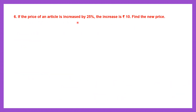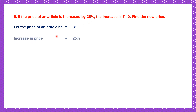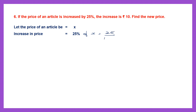Question 6. If the price of an article is increased by 25%, the increase is rupees 10. Find the new price. The price of the article is not given, so let's consider that price to be x. If it is increased by 25%, the increase in price is 25% of x, which is already given as 10 rupees. 25% of x means 25 by 100 into x. We can cancel 25 and 100 — 1 and 25 fours are 100. So the increase in price is x by 4, which equals 10. That means x by 4 is equal to 10.